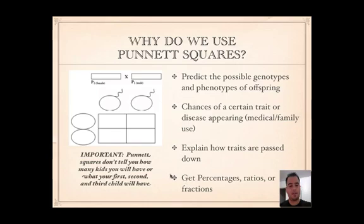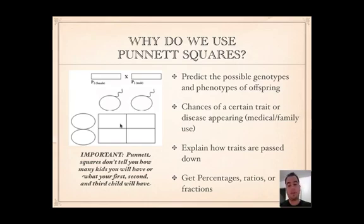Remember that Punnett squares don't tell you how many kids you're going to have. This doesn't say you're going to have four kids, or that your first one's going to have a certain disease or the second one's going to have this or that. All it does is give you a percentage of the chances — the likelihood, also called the probability, that a child will be born with something.